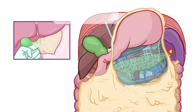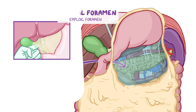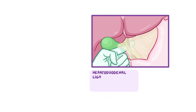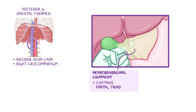These two spaces communicate through the omental foramen, also called the epiploic foramen. Anterior to the omental foramen is the hepatoduodenal ligament, which is the free edge of the lesser omentum that contains the portal triad. Posterior to the omental foramen is the inferior vena cava and the right crus of the diaphragm. Superior to the omental foramen is the liver, and inferior to the omental foramen is the first part of the duodenum.